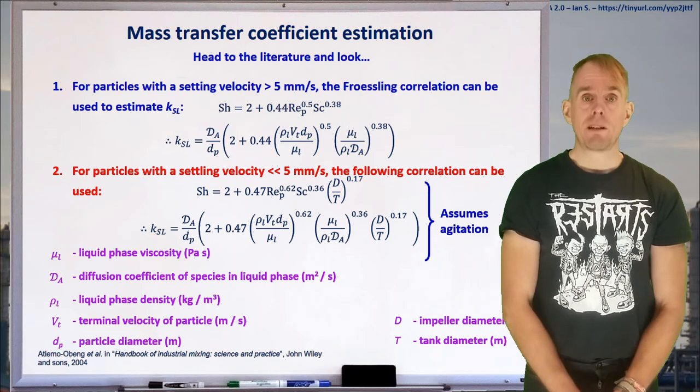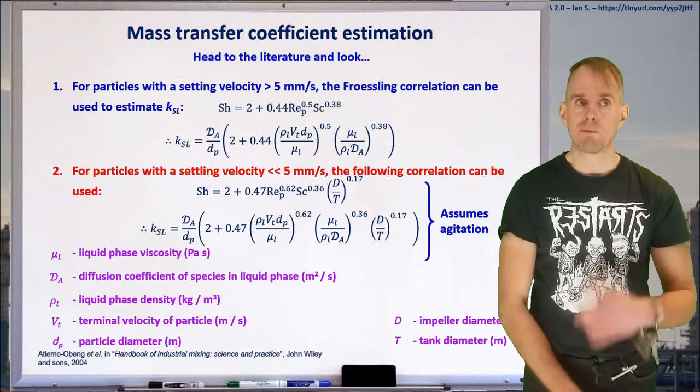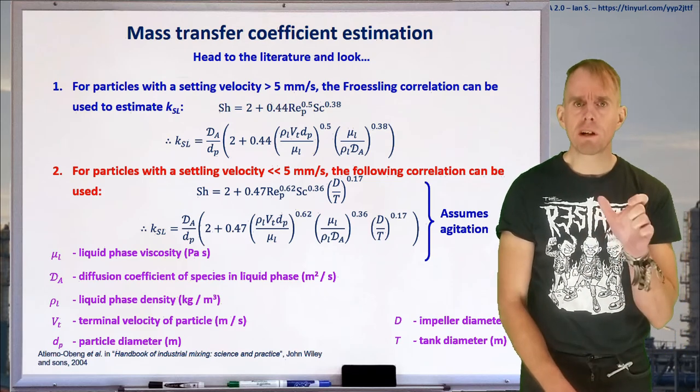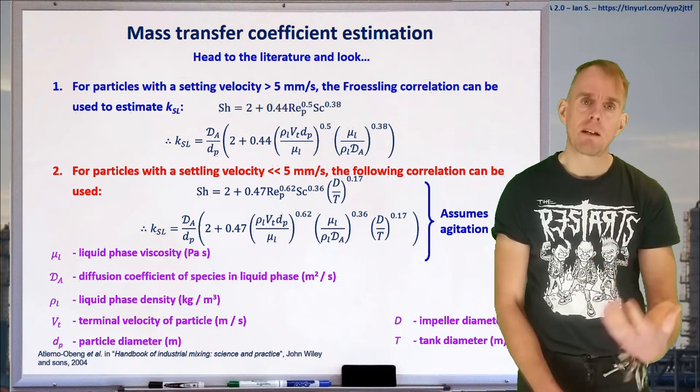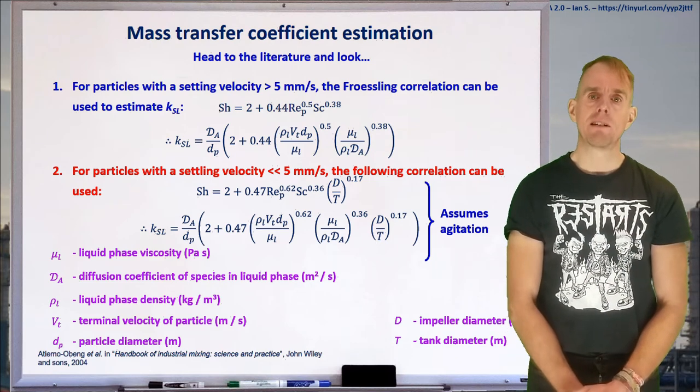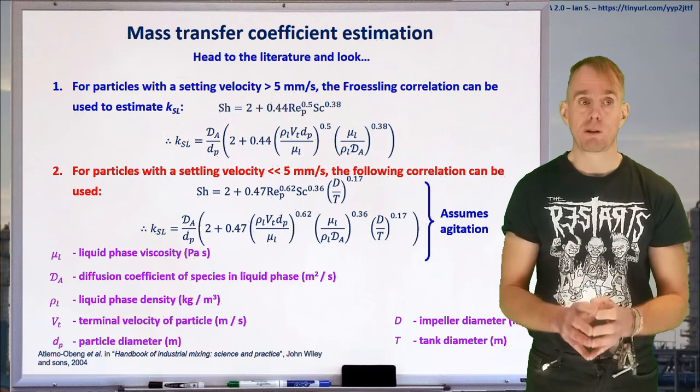If we look at the other terms in these correlations, we'll find that we've got the usual sort of liquid physical property terms. We've got viscosities and densities present. But we've also got our diffusion coefficient of species in the liquid phase. So remembering back to last lecture, we need to have some idea of what that diffusion coefficient is and, again, go into the literature and have a look.